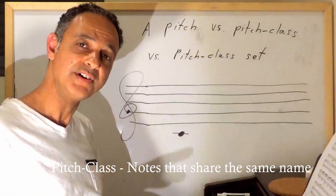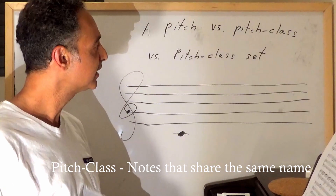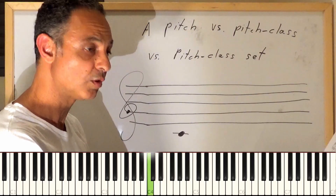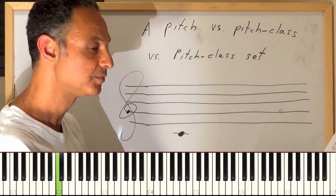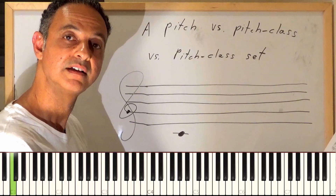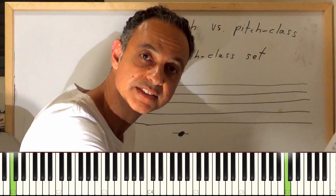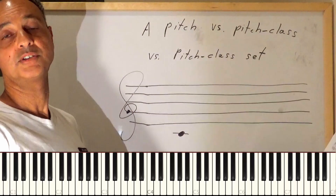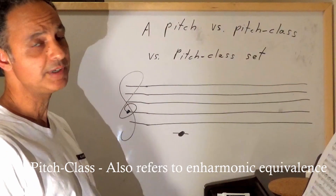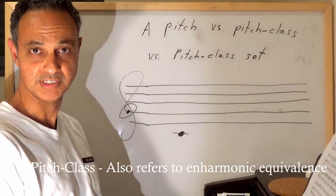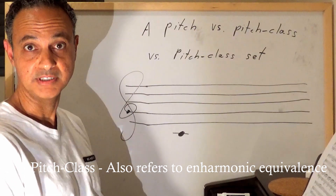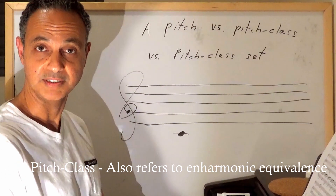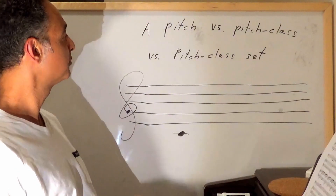When I'm talking about pitch class, I'm talking about a generic C — a generic pitch class C — meaning it might be C4, C3, C2, C1, or even C7. On top of that, when I'm talking about pitch class I'm talking about enharmonic equivalence, meaning that B-sharp is also C, or D double-flat is also C.